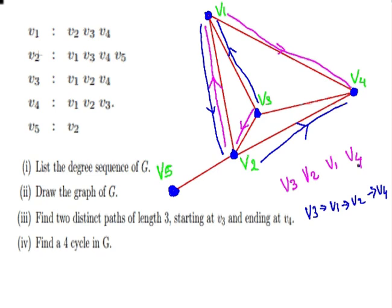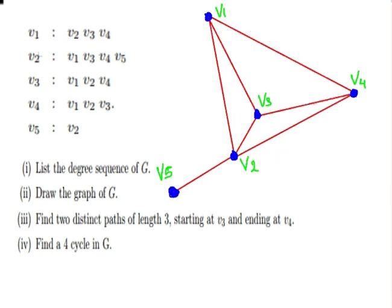Now what we're going to do is find a cycle of length 4 in G. Well, the difference between a cycle and a path is that a cycle has to start and end at the same place.